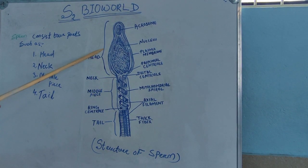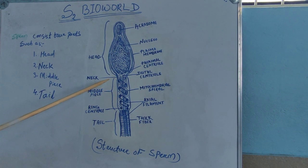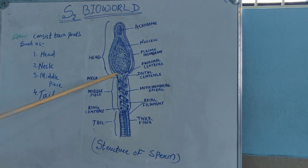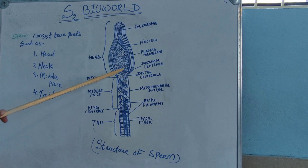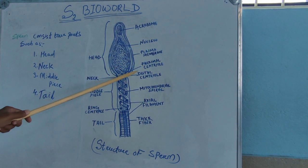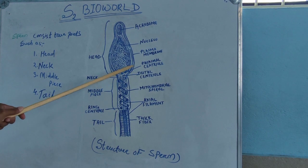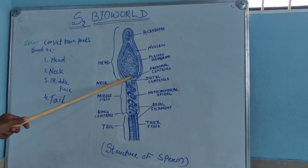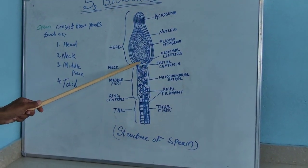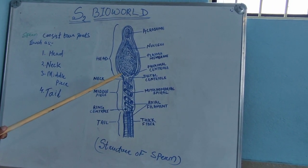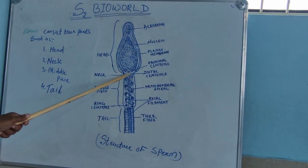The next part is the neck. The neck part is present in between the head and the middle piece. The neck is narrow and consists of two centrioles: the proximal centriole and the distal centriole. The proximal centriole is present at the depression of the posterior part of the nucleus.